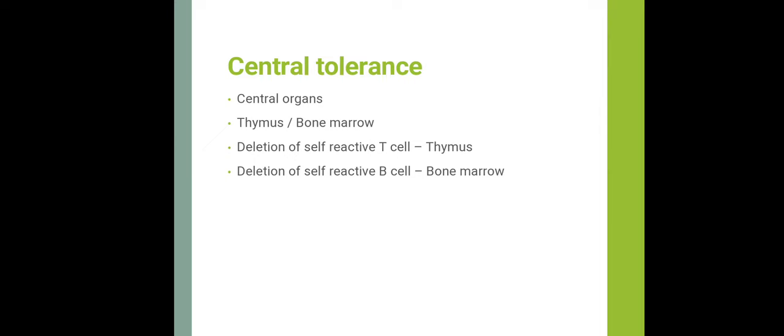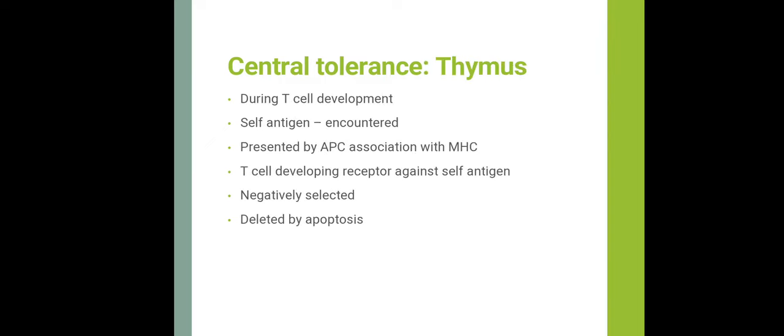Central tolerance occurs in the central immune organs — the thymus and bone marrow — where deletion or evasion of self-reactive T-cells happens in the thymus. During T-cell development, self-antigens are processed and presented by thymic antigen presenting cells in association with self-MHC. Any developing T-cell expressing a receptor for such self-antigen is negatively selected and deleted by apoptosis, so the peripheral T-cell pool is devoid of self-reactive cells.